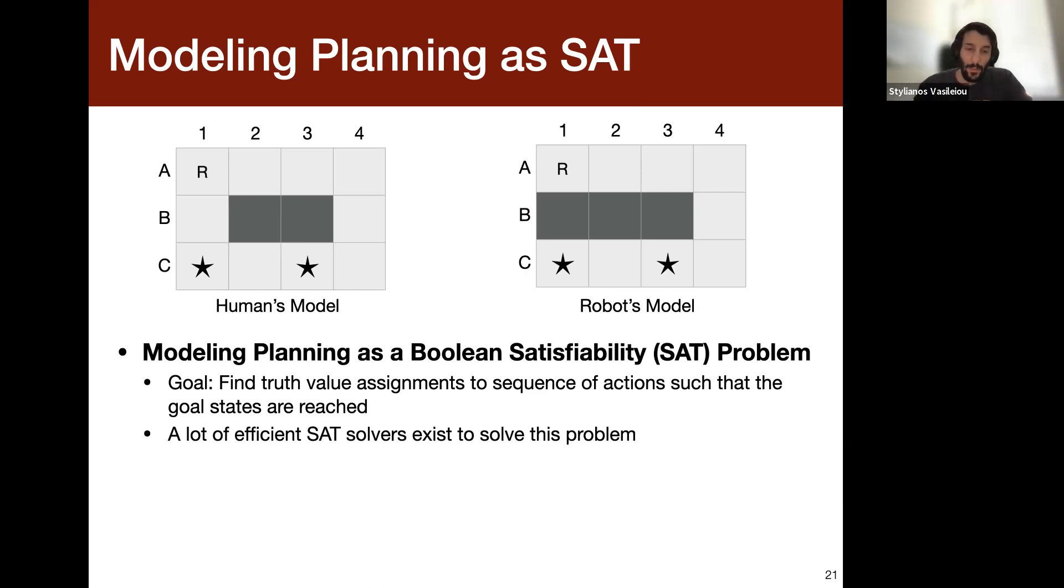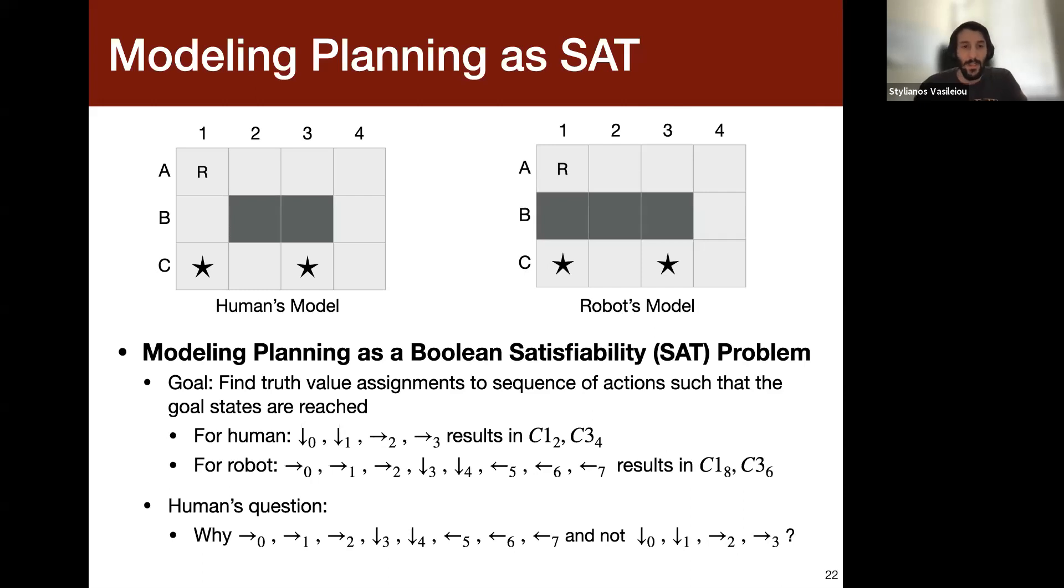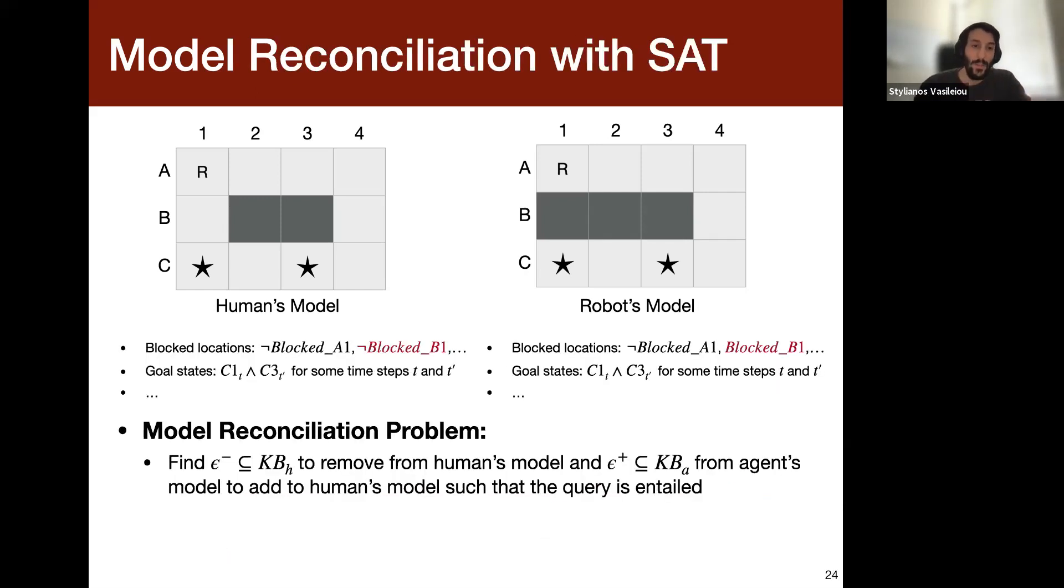And of course, in planning as a SAT, we want to find a true value assignment to the sequence of actions, such that the goal states are reached. And there are a lot of efficient SAT solvers nowadays to solve such problems. So a bit more details. Let's say the human now has the plan to go down, down, and right, right, which results in the goal state, and the robot has a slightly longer plan than the human. And then the human asked the question of why your plan instead of mine. And this basically will be the query in our formulation. We want to find what to remove from the human's knowledge base and what to add, such that the query is entailed. And in this trivial example, what we remove is that B1 is not blocked, and what we add is that it's indeed blocked.